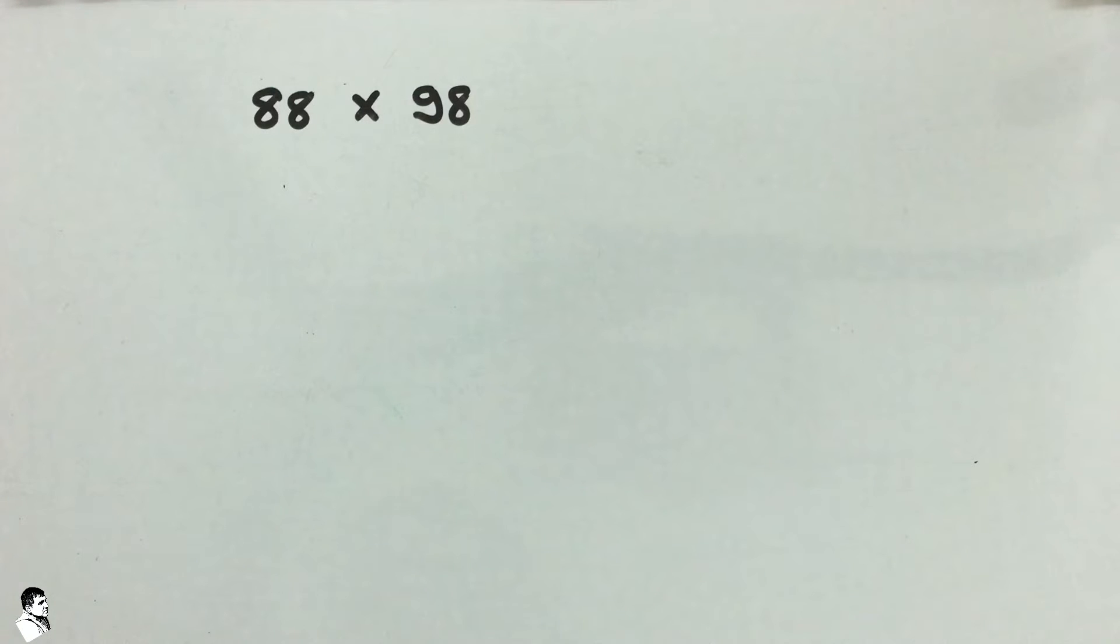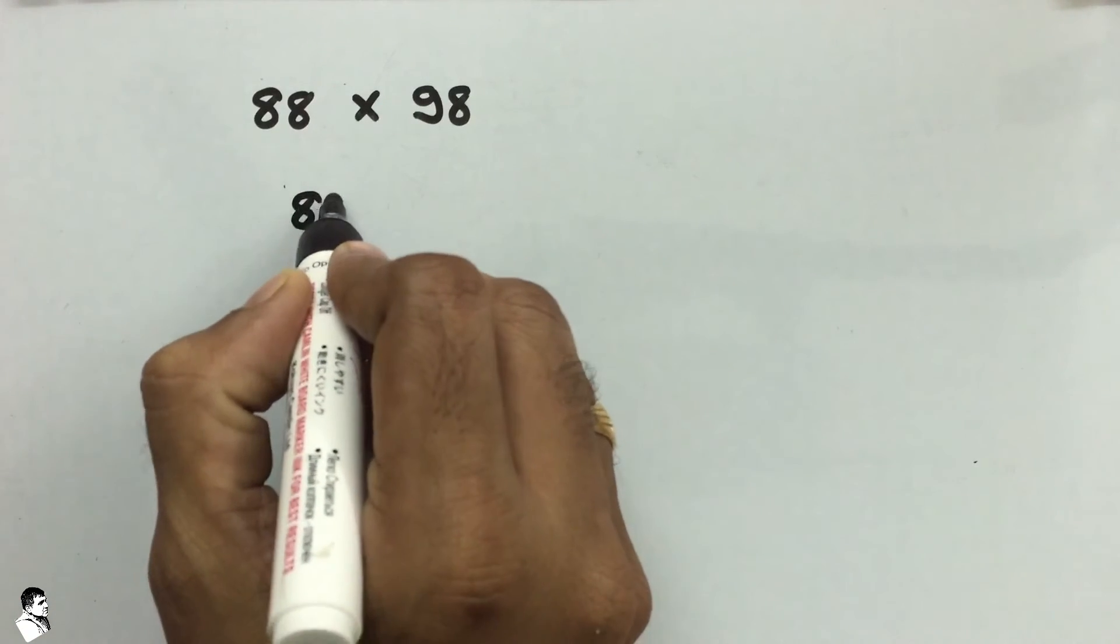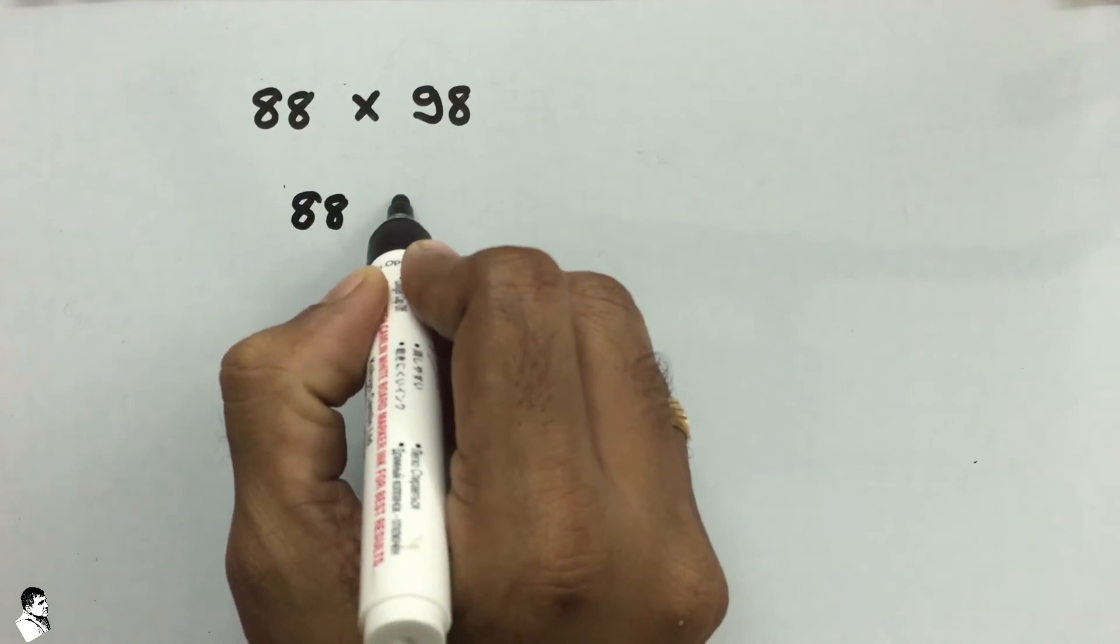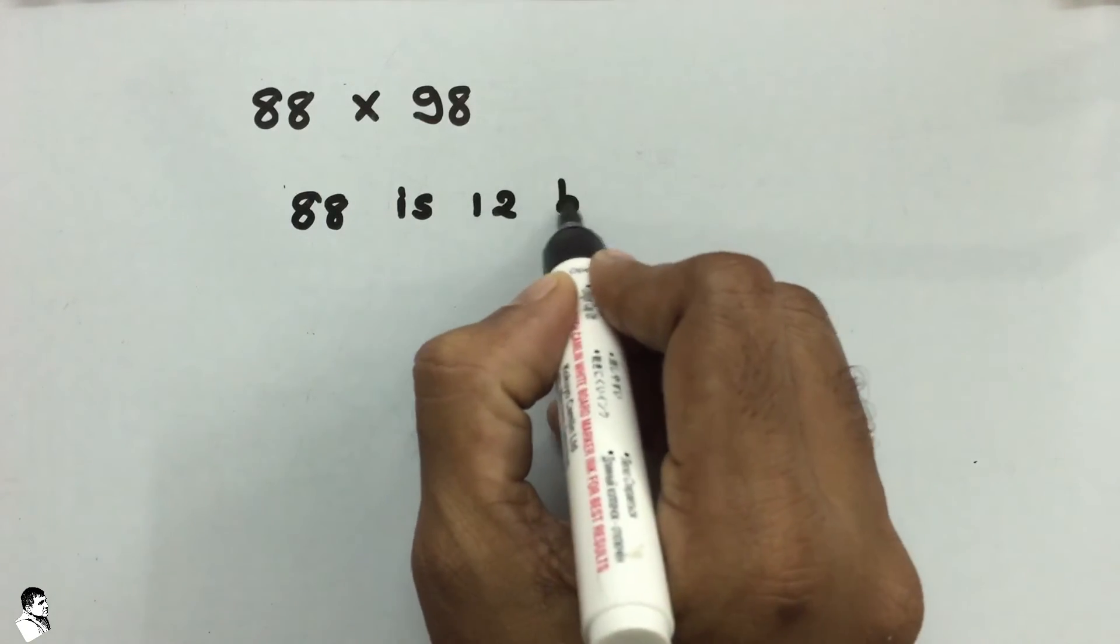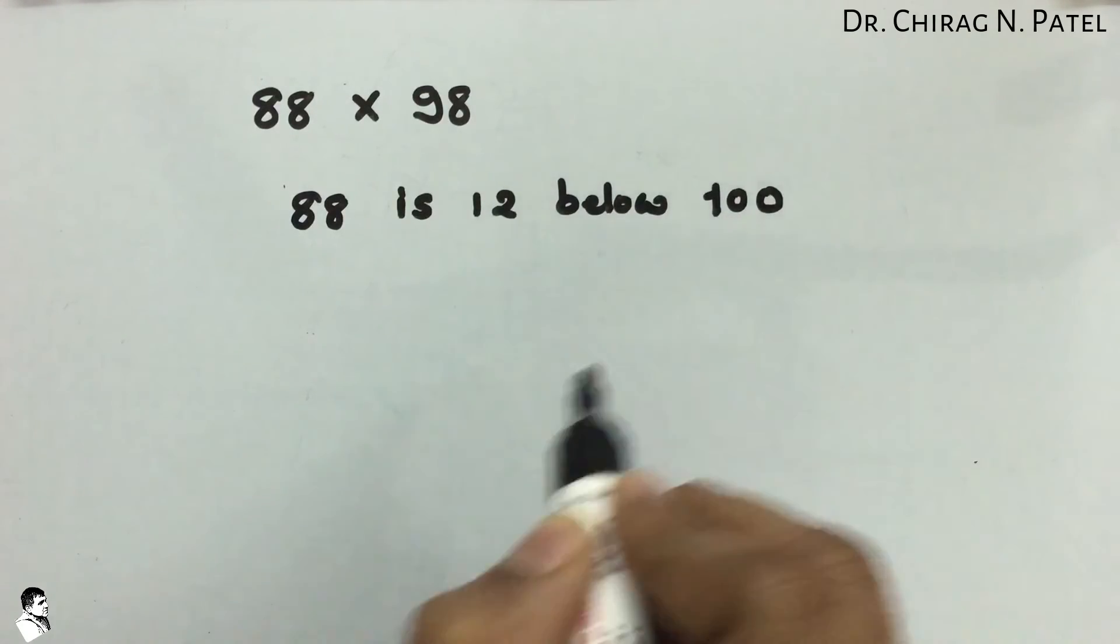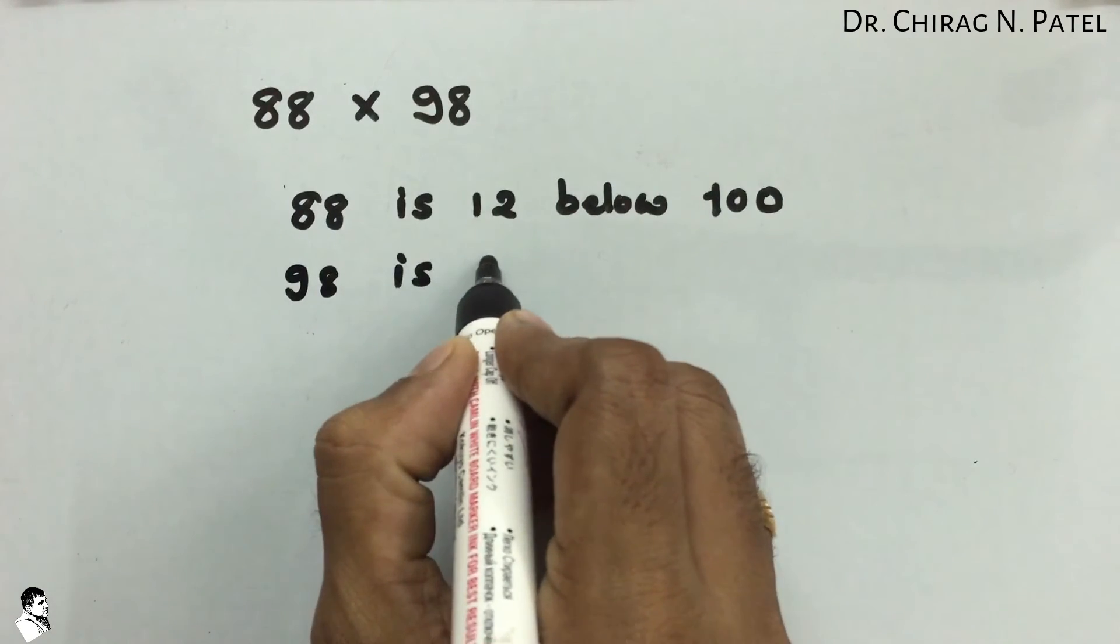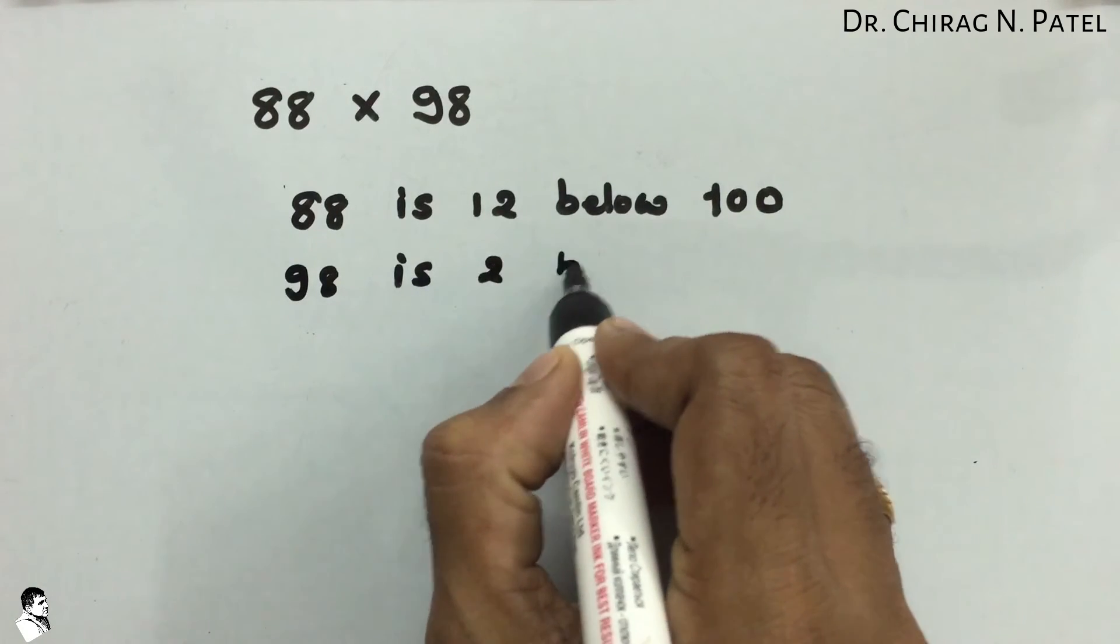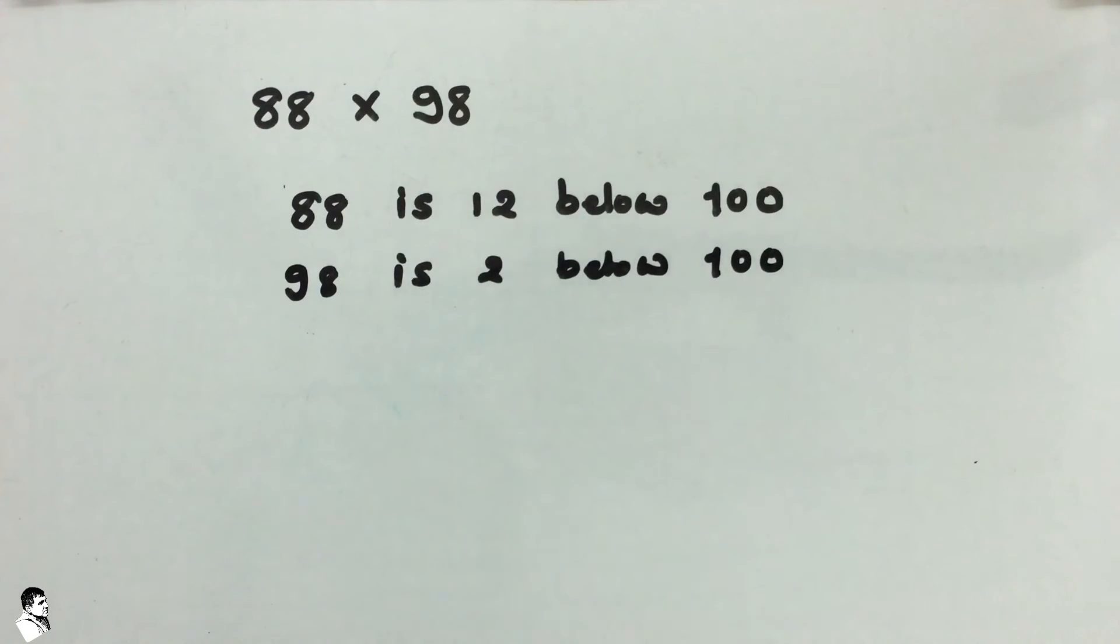Now let us see what that is. So here we just take the first value, 88, that is 12 below 100, and 98 is 2 below 100.